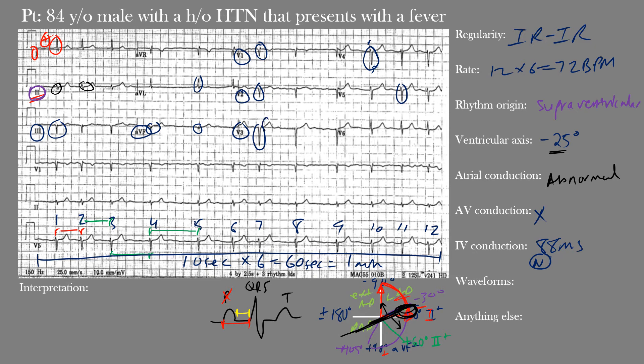Remember: the Q wave is the first negative deflection before the R wave in the QRS complex, and the S wave is the first negative deflection after the R wave. The T waves appear present, asymmetric, and normal. Without a P wave we can't comment on the PR segment or PR interval. QRS amplitudes appear within normal limits, the ST segment doesn't appear significantly elevated or depressed, and the QT interval appears within normal limits. The only major waveform abnormalities are the abnormal Q waves in leads III, aVF, V1, V2, and V3.